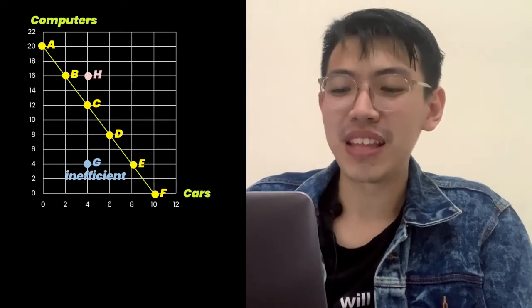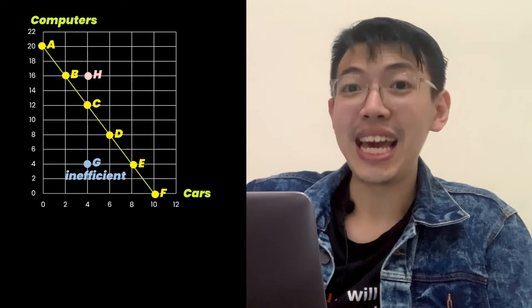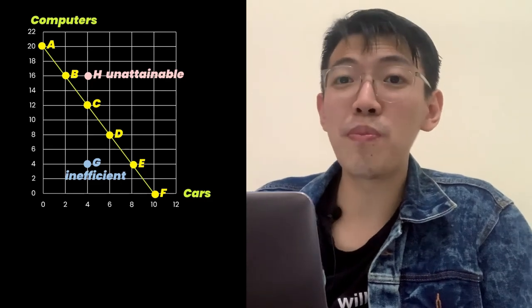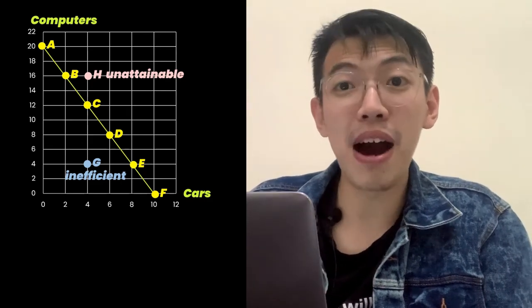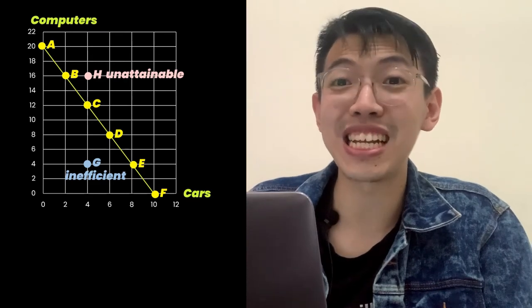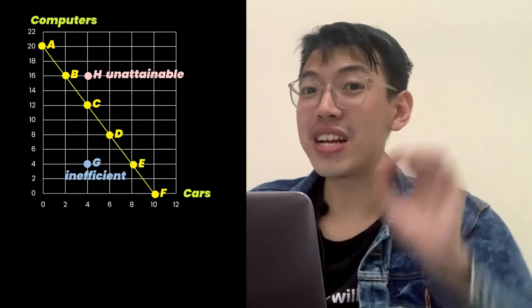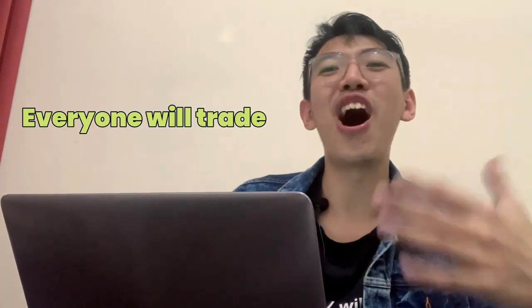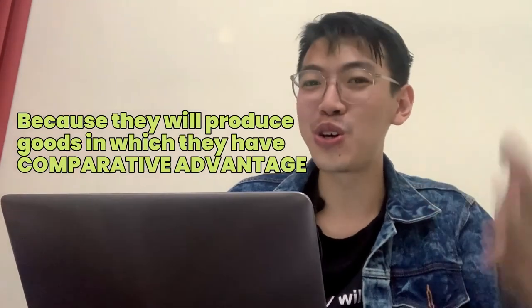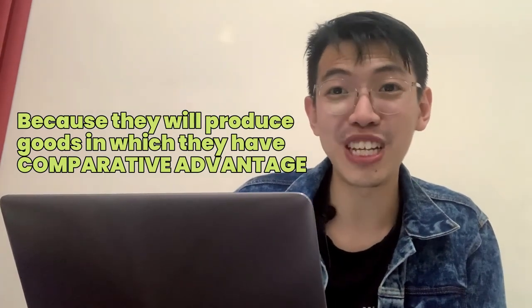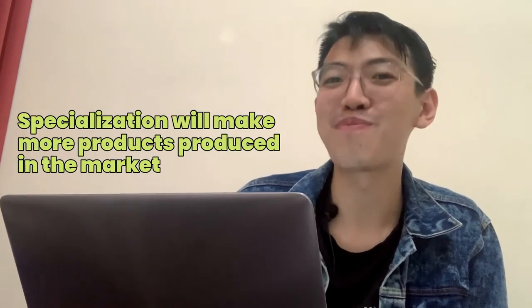A point above the PPF line is unattainable — it is impossible for the USA to produce there, for example four cars and 16 computers, because of lack of resources, which we call scarcity. In conclusion, everyone and every country will always trade, because they produce goods or services in which they have comparative advantage. Through specialization, there will be more products produced in the market.